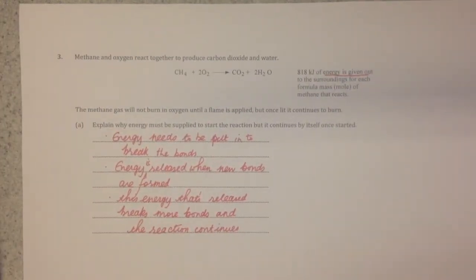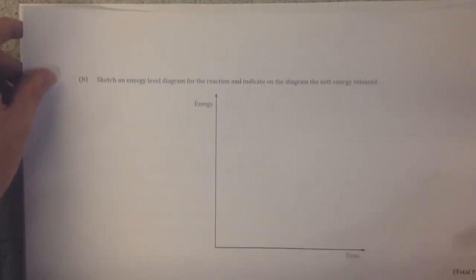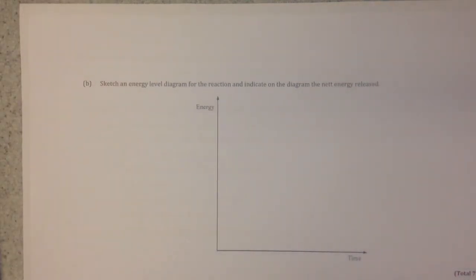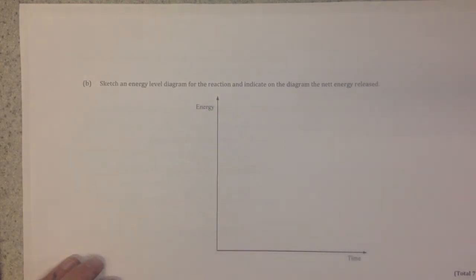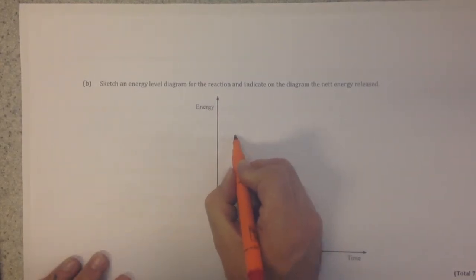The question then asks to sketch an energy level diagram for the reaction and indicate the net energy release. We have energy on the side and time on the bottom. Because it's exothermic,